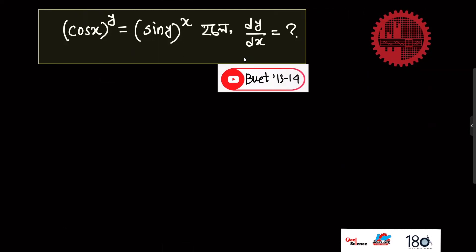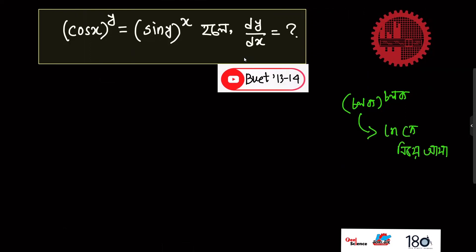So we have a function to the power of a function — this is a power-to-power situation. In this case, the first thing we will do is take ln — the natural logarithm. ln means the natural log with base e.